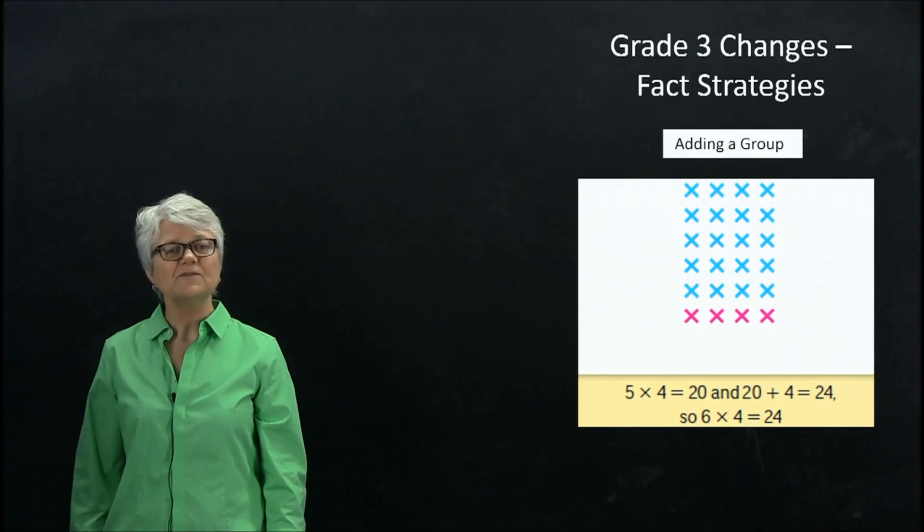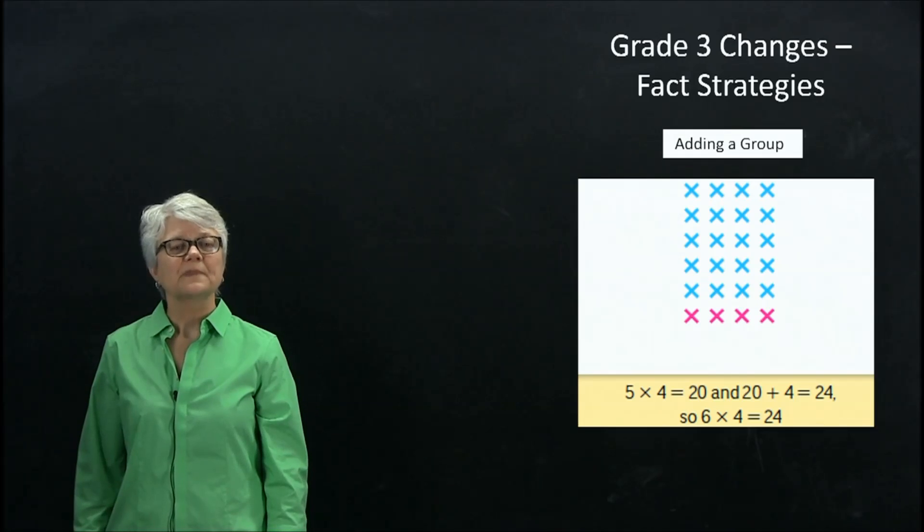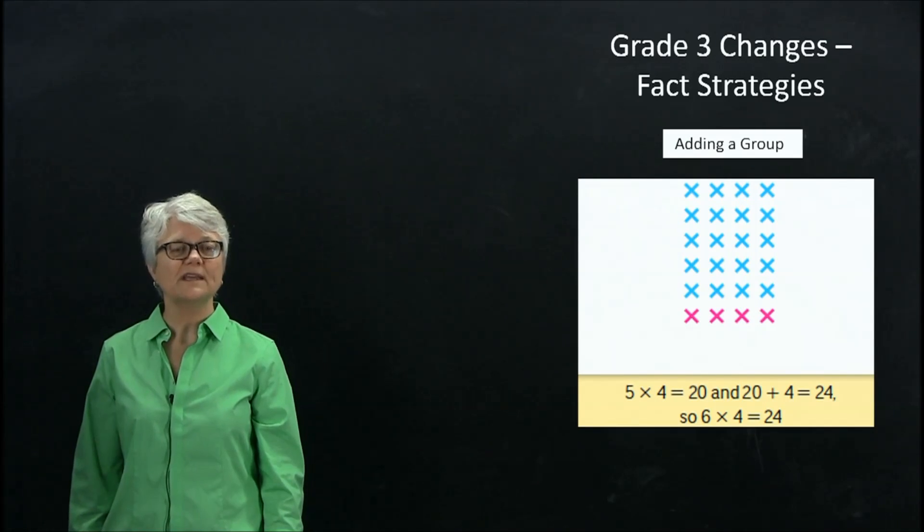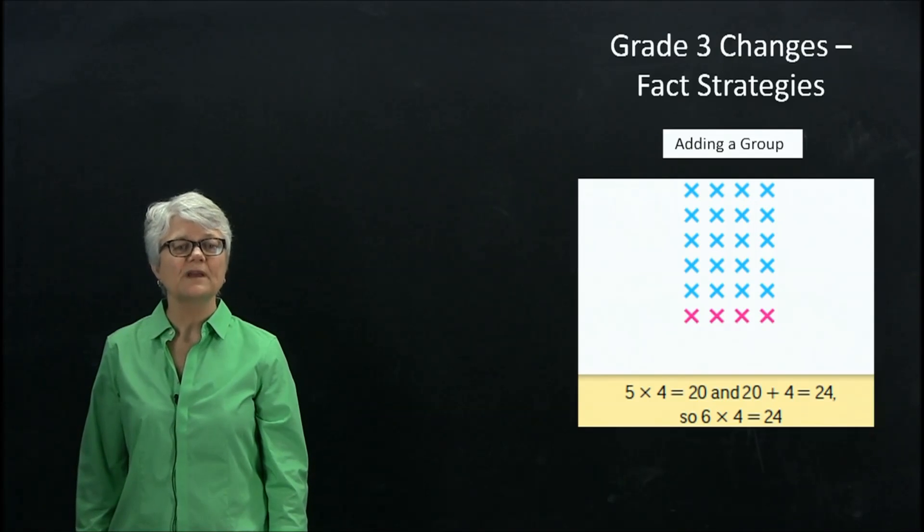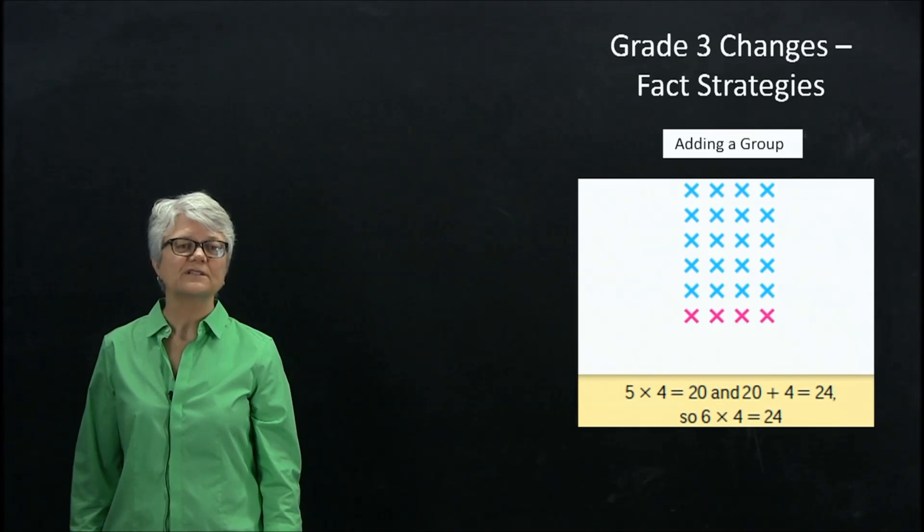So a child faced with a fact such as 6 times 4 and not knowing it can say, well, I know what 5 groups of 4 are, and that's 20. If I add another group, that's 20 plus 4. So then I know that 6 times 4 is 24.